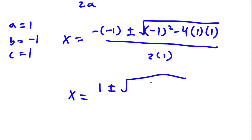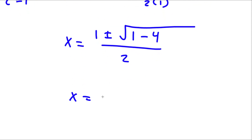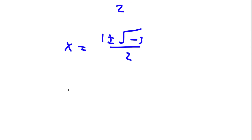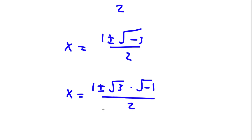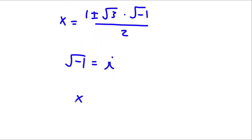Now negative of negative 1 is positive 1, so I have positive 1 plus or minus the square root of negative 1 squared — which is positive 1 — minus 4 times 1 times 1, which is 4, over 2 times 1, which is 2. This gives me x equals 1 plus or minus the square root of 1 minus 4, which is negative 3, over 2. Now the square root of negative 3 can be rewritten as the square root of 3 times the square root of negative 1, and the square root of negative 1 is equal to i. So now I have x is equal to 1 plus or minus the square root of 3 times i, over 2.